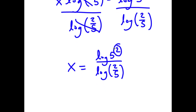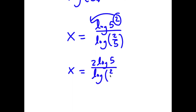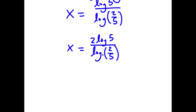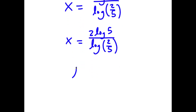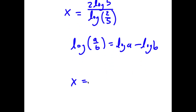Now I can move this exponent 2 to the front. So now I get x is equal to 2 times log 5 over log of 2 over 5. And if I have something in the form log a over b, this is equal to log a minus log b. So this is equal to 2 times log 5 over log 2 minus log 5.